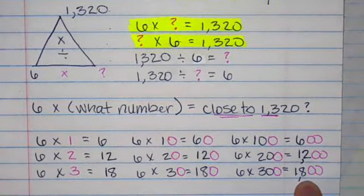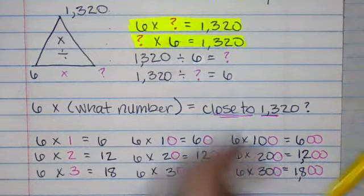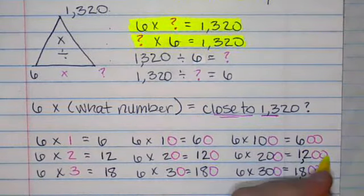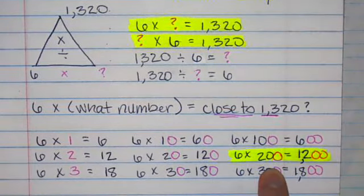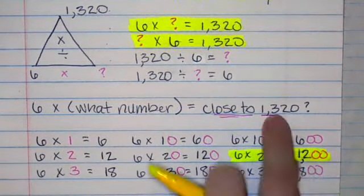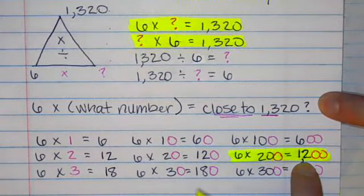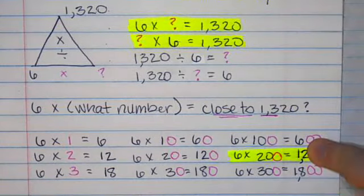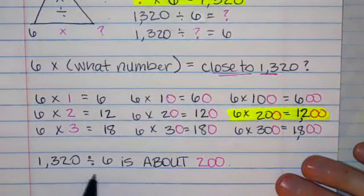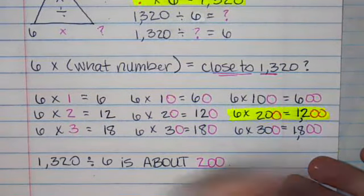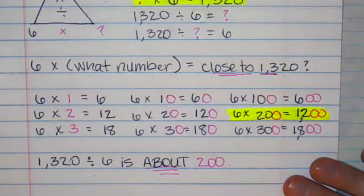Looking at these three amounts right here, I am finding that this would probably be the way to go. Six times 200 equals 1,200. 1,200 is the closest to 1,320.